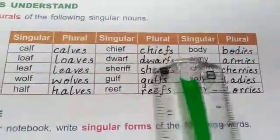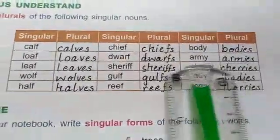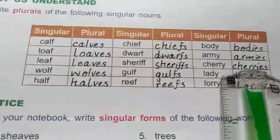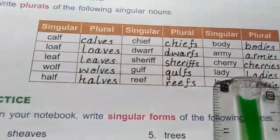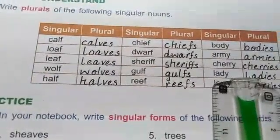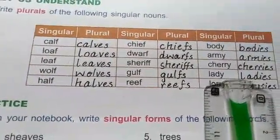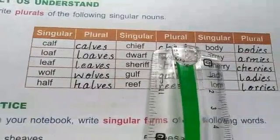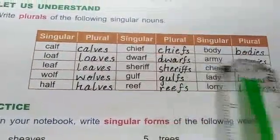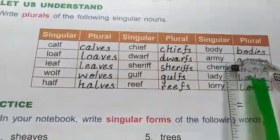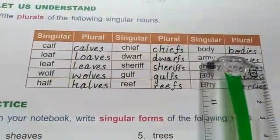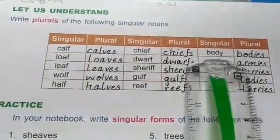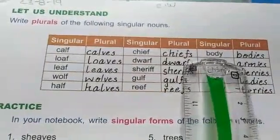Body — Bodies. Army — Armies. By adding I-E-S to words that end in Y. Okay, we use I-E-S in plural, because the ending word is Y.